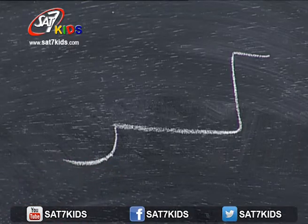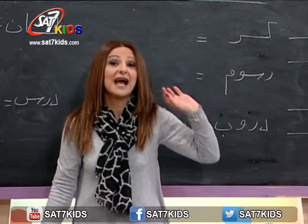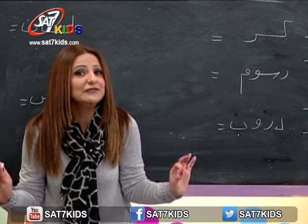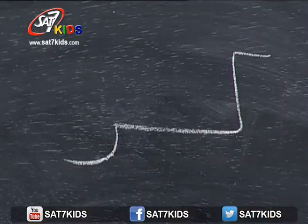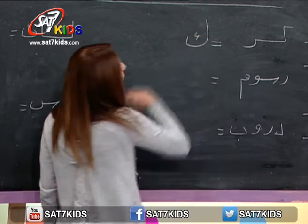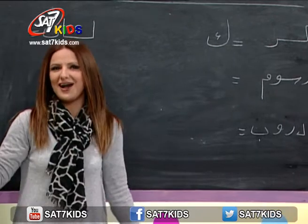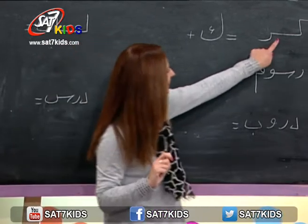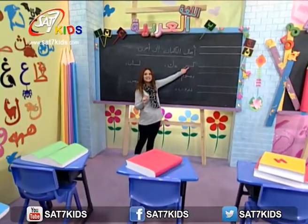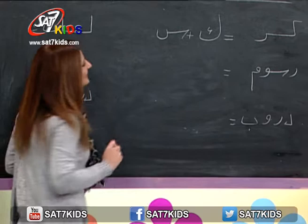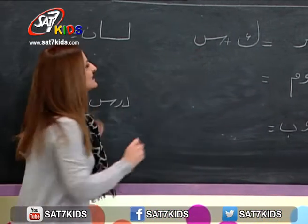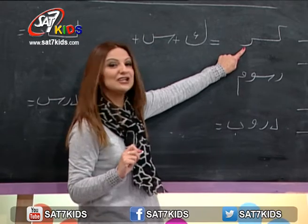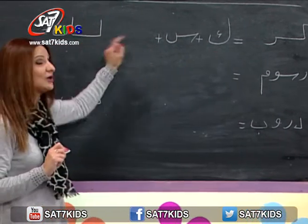أول كلمة: كسرة. بهيدي الكلمة عندي ثلاث أحرف. بدي حللها وأكتب كل حرف بشكله الأصلي المنفرد. أول حرف هو حرف الكاف. تاني حرف هو حرف السين، بكتبه بشكله المنفرد. زائد تالت حرف هو حرف الراء، هون الحرف متصل بالكلمة، أنا بدي أكتبه حرف منفرد.